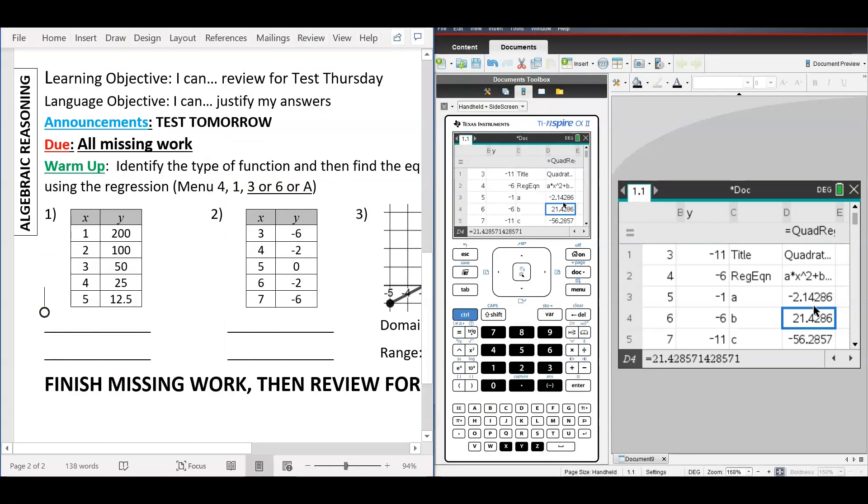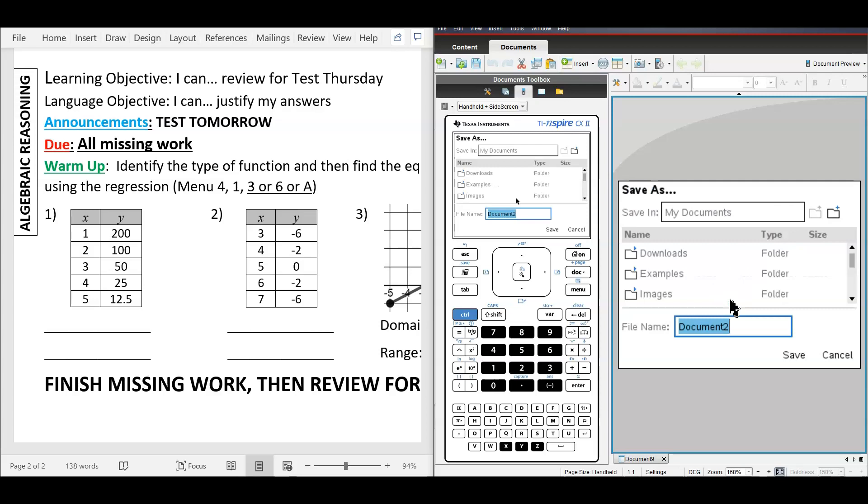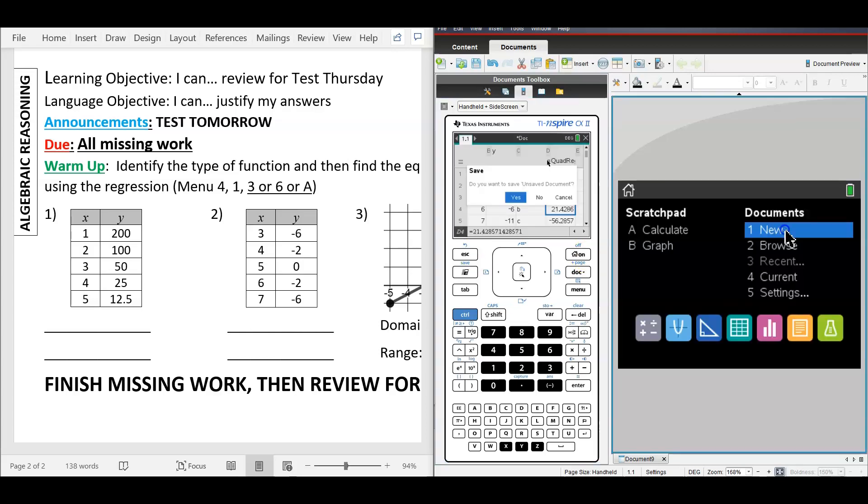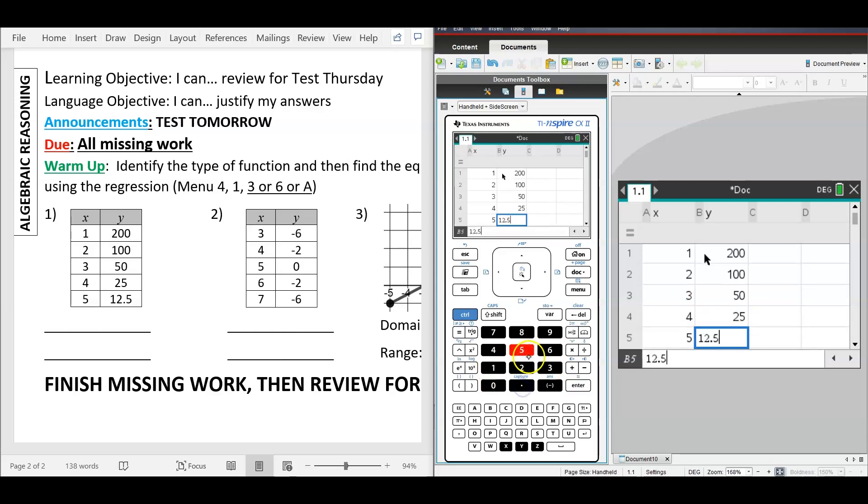Okay, so here we go. Let's get there first. Okay, so X and Y at the top. One, two, three, four, five on the left side. Okay, 200, 100, 50, 25, 12.5.